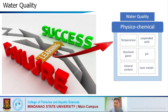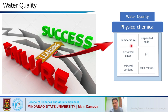As an introduction, the success and failure of hatchery operations depends upon our knowledge of water quality — the physical-chemical characteristics of the water coming into your hatchery. The physical-chemical parameters are: temperature, dissolved solids, dissolved gases, pH, mineral content, and toxic metals. We will go through each one of these in the succeeding slides.